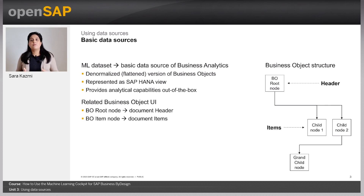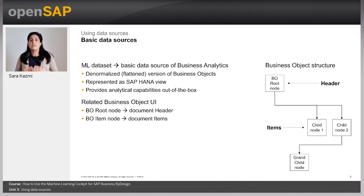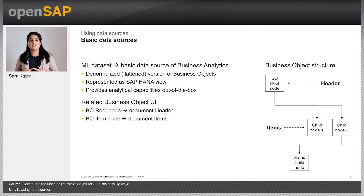The selection of the type of data source — whether it's at header level, item level, or some other business object node level — determines where ML predictions can be consumed. If we want to see predictions in the document header, we need to use a header-level data source. If we want to see predictions on document items, we need to use an item-level data source. For our sales quote prediction, we chose item level, because header level does not contain information about items, and we believe that information like product type, product, quantity, price, etc. can be factors that influence the sales quote outcome.